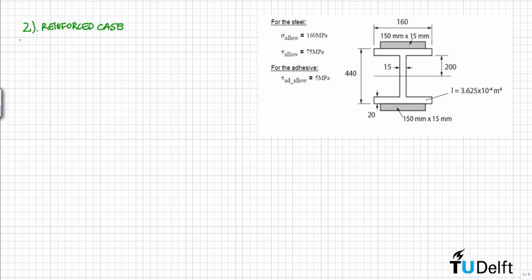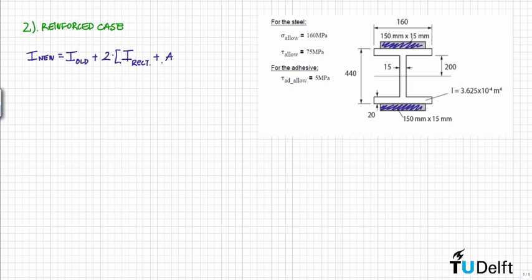Now for the reinforced case, we first need to determine the new moment of inertia. The new moment of inertia is equal to the original moment of inertia plus the contributions from the two reinforcement plates — since they are symmetric, this is 2 times the moment of inertia of one rectangular part. We apply Steiner's theorem (parallel axis theorem): I_rect plus A times d squared, where A is the area of the reinforcement and d is the distance from its centroid to the neutral axis.